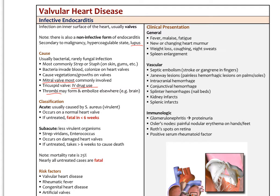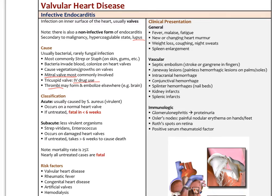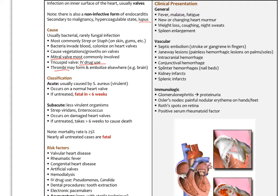We classify infective endocarditis as either acute or chronic. Acutely, it's caused usually by staph aureus and occurs on a normal heart valve. If not treated appropriately, it can be fatal within six weeks. Subacutely, less virulent organisms like strep viridans and enterococcus are involved, usually in people with damaged heart valves, and if untreated it takes longer than six weeks to cause death. The mortality rate overall can be up to 25%, and nearly all untreated cases are almost always fatal.